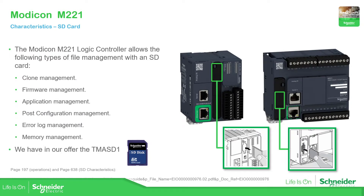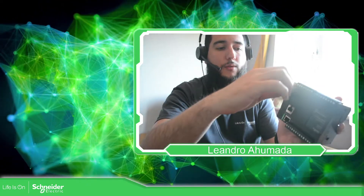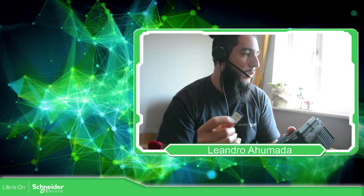The next feature is the SD card, which is also located in the same area next to the run-stop switch — below or above it depending on the controller you have. There is one space for the SD card, and you can use a Schneider Electric one or one with less than 16 gigabytes.